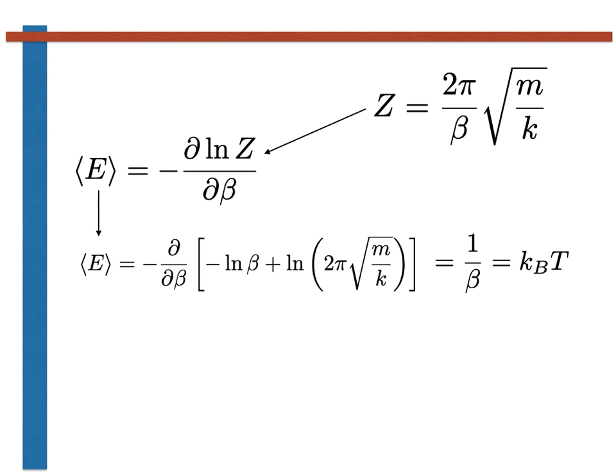This result is in accordance with the prediction of classical equipartition. Remember that this theorem tells us that each quadratic term in the Hamiltonian, each degree of freedom, contributes half kBT to the average energy of the system. There are two quadratic terms in the Hamiltonian for harmonic oscillator, so equipartition predicts that the average energy is thus kBT, as we have just derived.